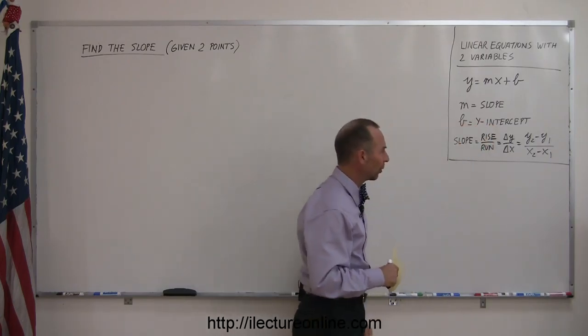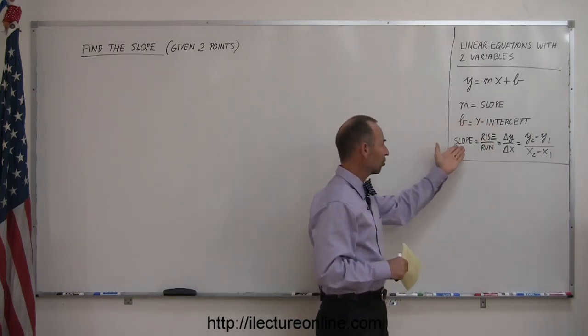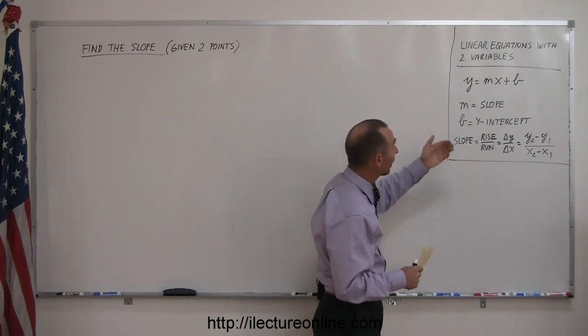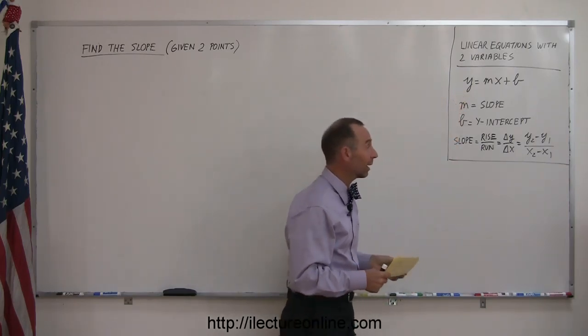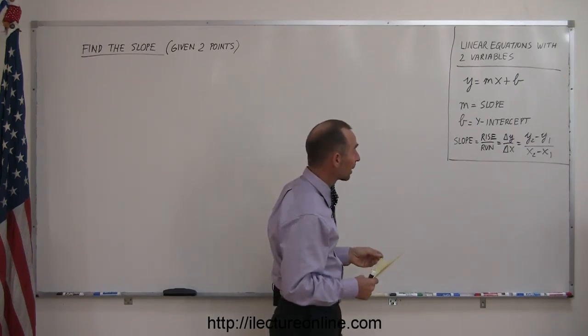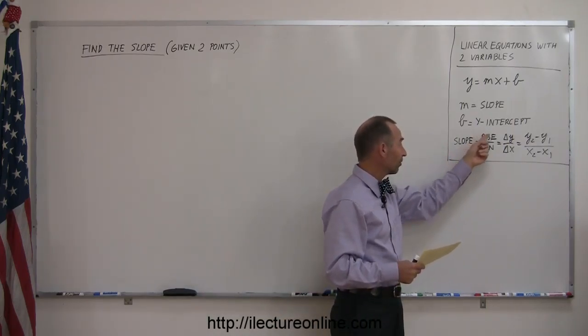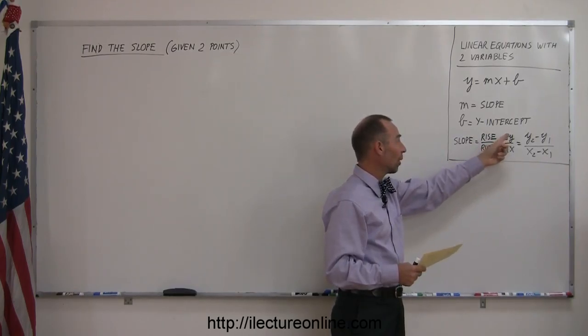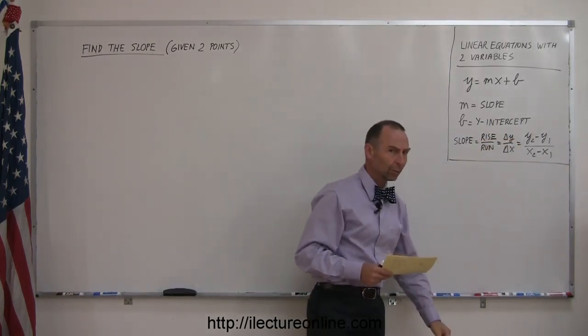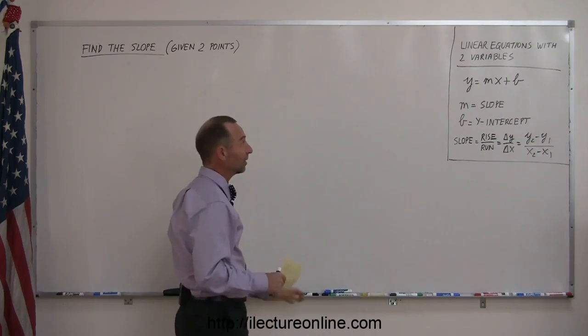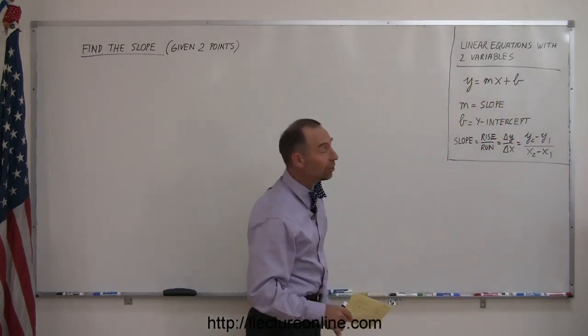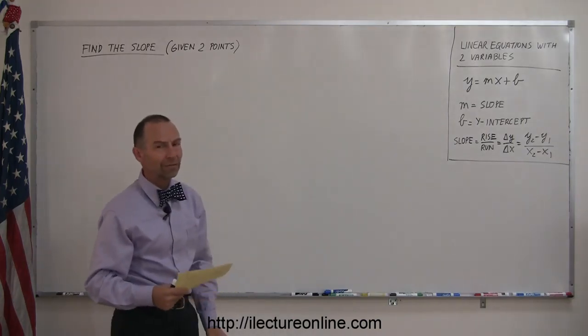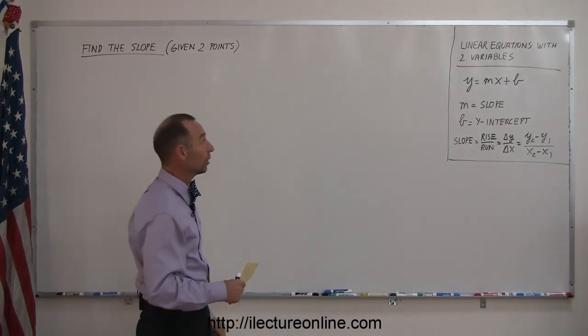We'll see in just a moment all that means, and by definition, the slope of a line, and by the way a linear equation with two variables will be represented by a straight line on the xy axis. The slope by definition is the rise over the run, the change in the y over the change in x, and again we'll see in just a moment what all that means. But this is basically the whole thing, all what you need to know in order to solve a whole array of different kinds of problems that you're going to run into in algebra.